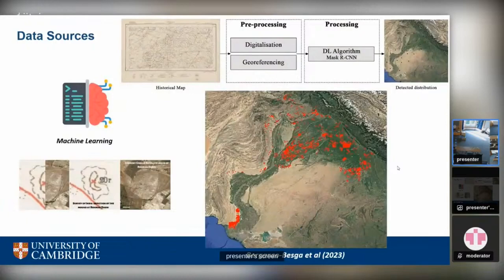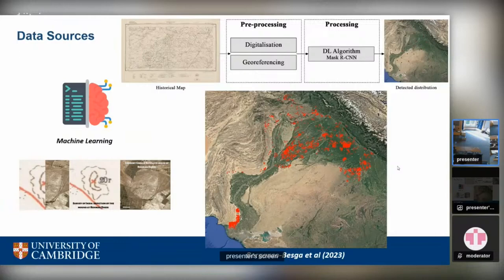An additional data source is machine learning based on historic maps. Rather than manually going through all geo-referenced maps and digitizing archaeological sites, we have partners working to automate this process. The archaeological site mound features have specific visualizations on the map sheets, and the machine learning algorithm is trained on these representations. It then runs on bulk map sheets to generate spatial output, and as we add more maps, it detects all those archaeological sites in a matter of minutes.